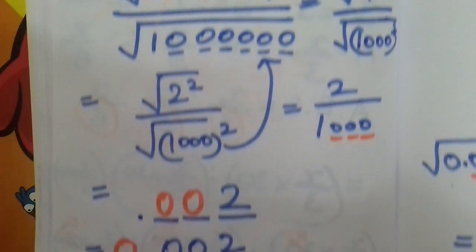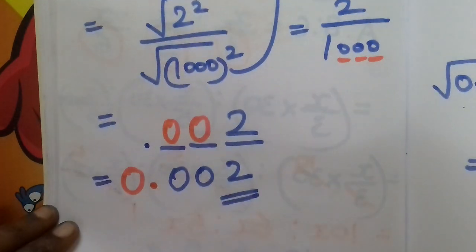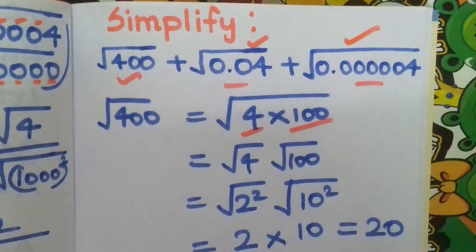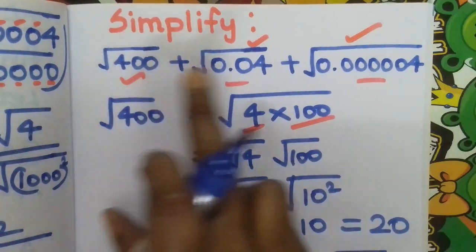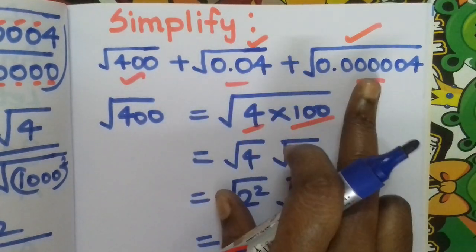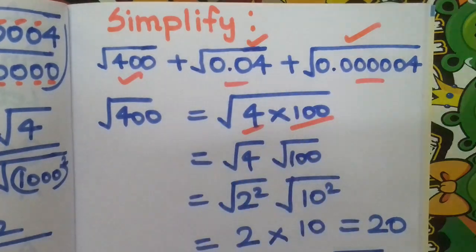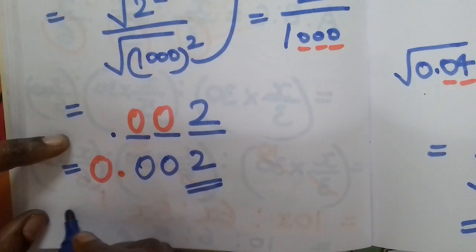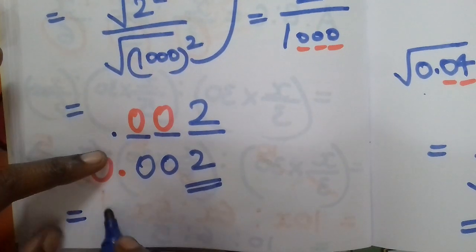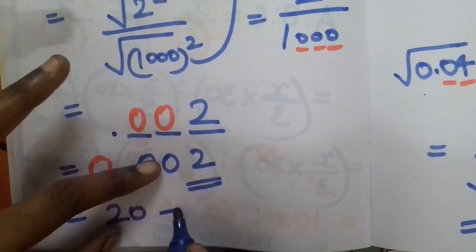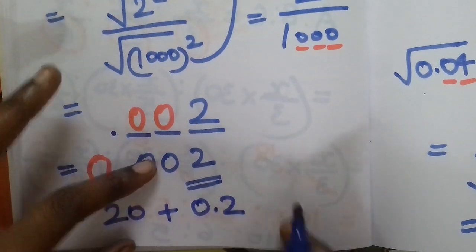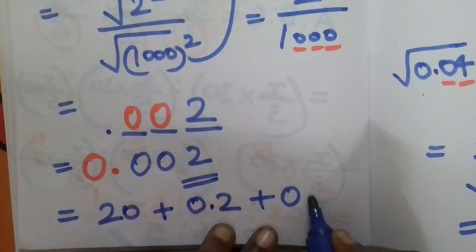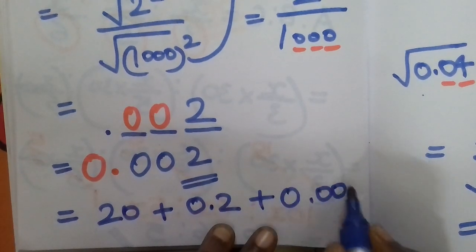So the answer for this part is 0.002. 2 by 1000 means shifting 3 places to the left, giving 0.002. So the third part answer is 0.002. Finally, add all three: 20 plus 0.2 plus 0.002.